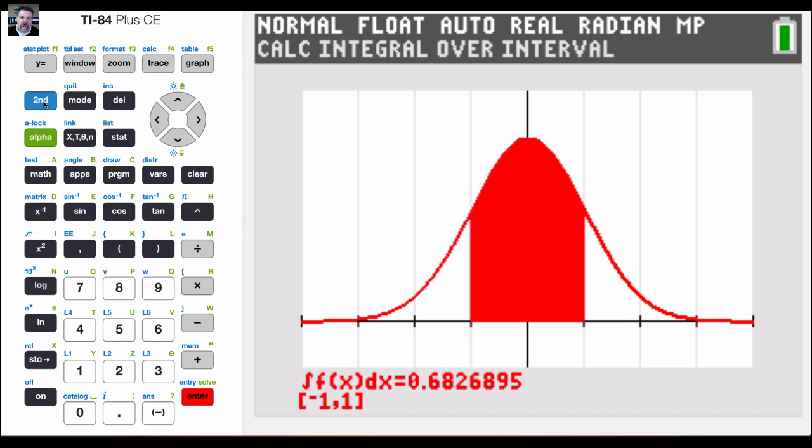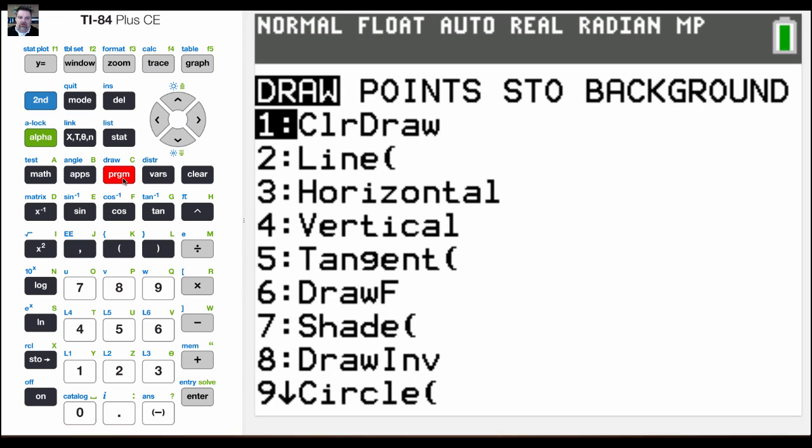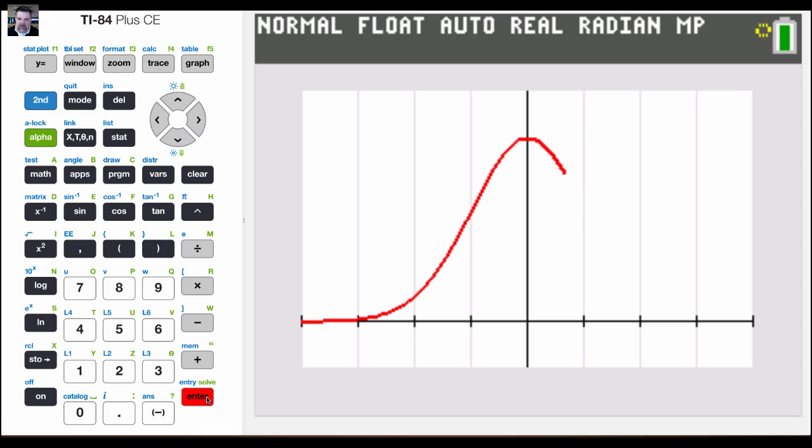The reason I wanted to hit the draw menu at first is in order to get rid of this area under the curve, I could just hit second program for draw and then just clear my drawing by hitting option number one and that will clear that out.